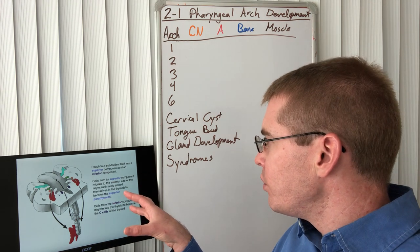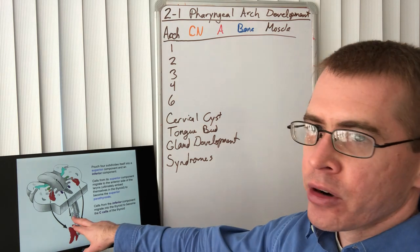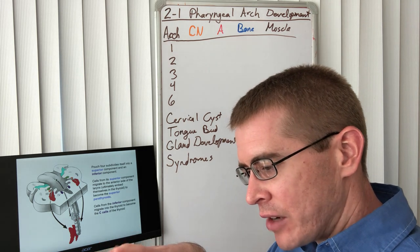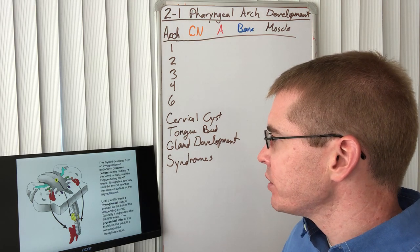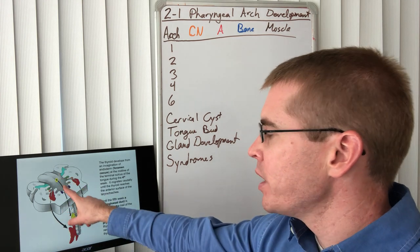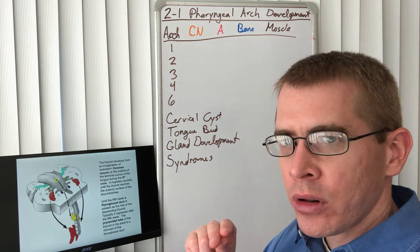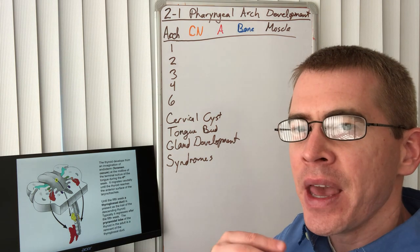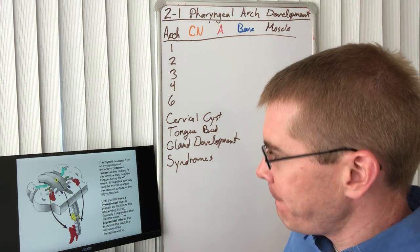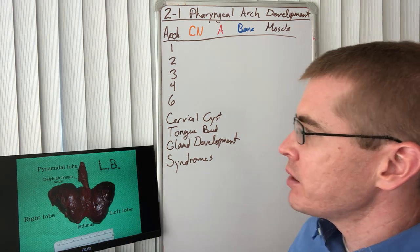So where are we now? We're on the fourth pouch. That pouch also subdivides. The superior component ends up forming the superior parathyroids on the posterior thyroid, and the inferior component forms the functional C cells of the thyroid gland. The rest of the thyroid is developed from a small region on the posterior portion of the tongue called the foramen cecum, and that ends up forming a thyroglossal duct as it travels down the neck. So that thyroglossal duct is why pyramidal lobes of thyroid gland sometimes exist. Here is an example of a thyroid gland ex vivo. You can see the lobes, the isthmus, and that pyramidal lobe.